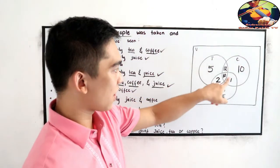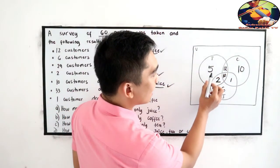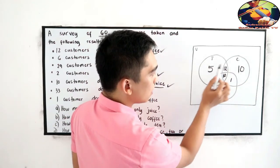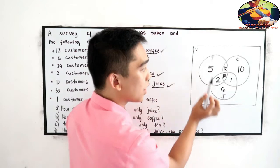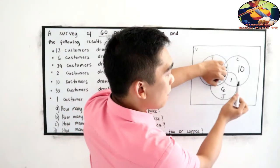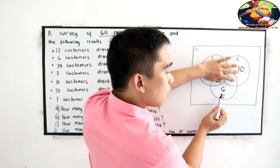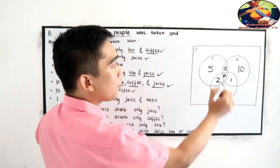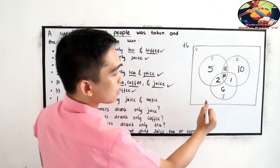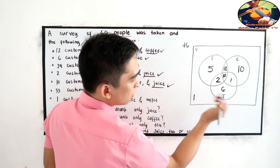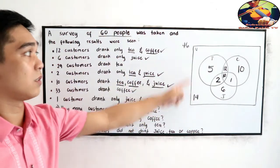Since all regions are now completed, let's check the total. Adding all values: tea region — 12 plus 10 plus 2 plus 5 equals 29. Then adding juice-coffee intersection 1, center 10, juice only 6, and coffee only 10: total across all sets is 46. Since 60 people were surveyed, 60 minus 46 equals 14. So 14 is placed outside all circles — these customers did not drink any of the three.